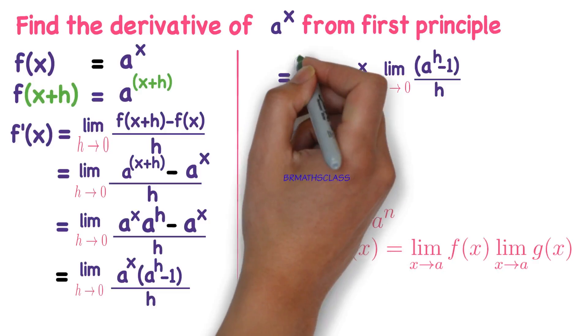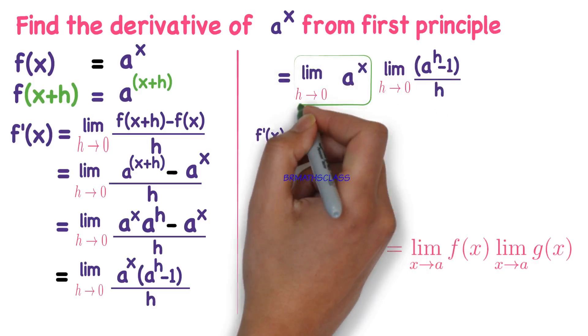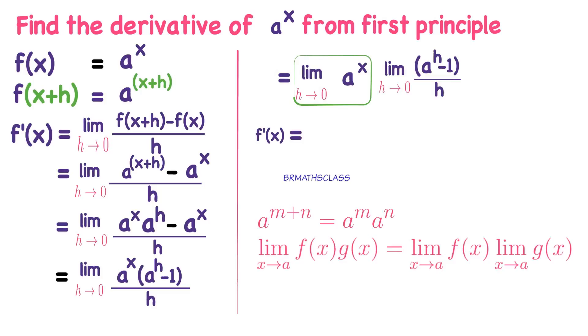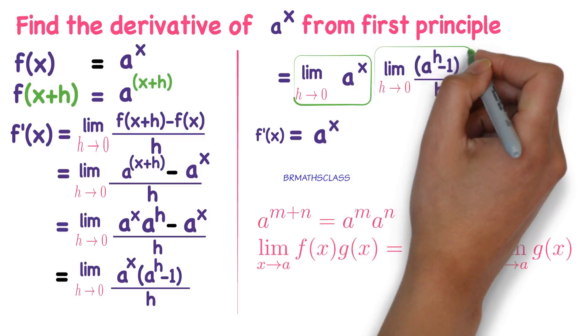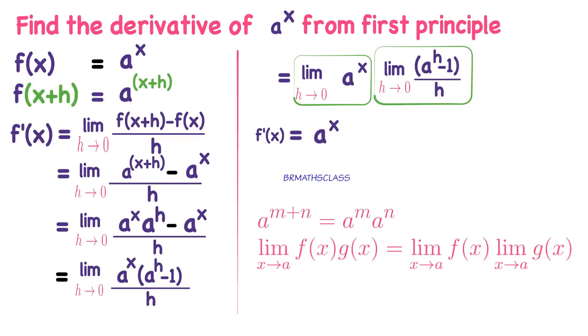If we apply the limit to this one, you observe a power x is nowhere related to h. Even though h approaches to 0, a power x is a power x only. Limit h tends to 100, a power x is also a power x. Now you apply limit to this part.